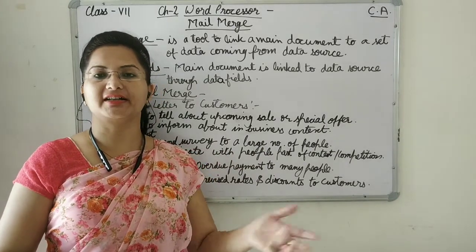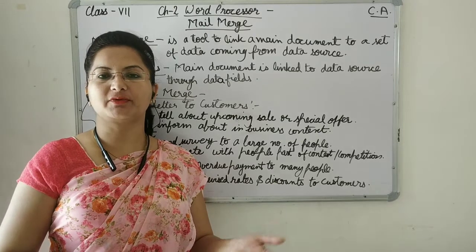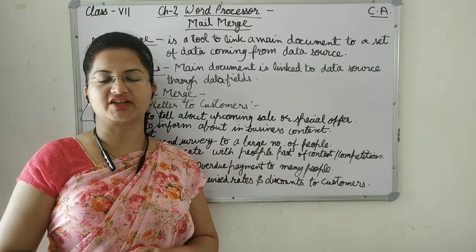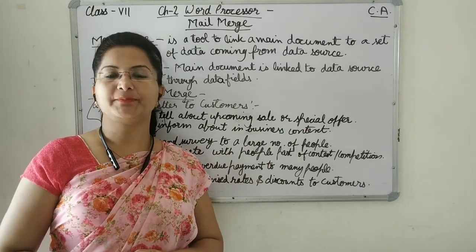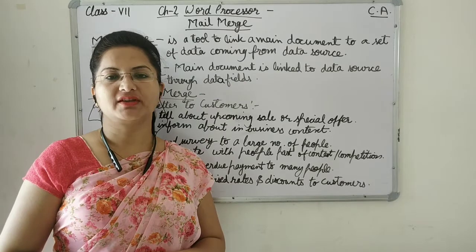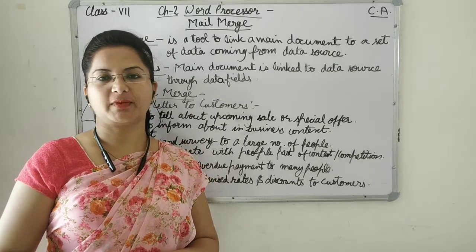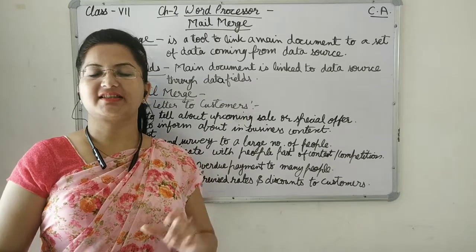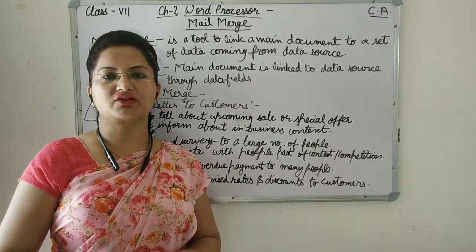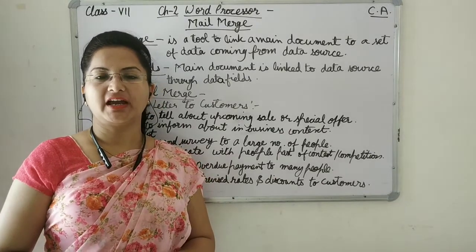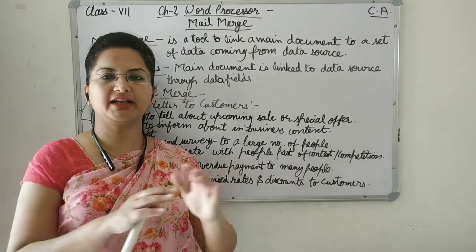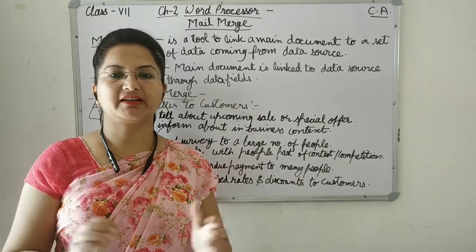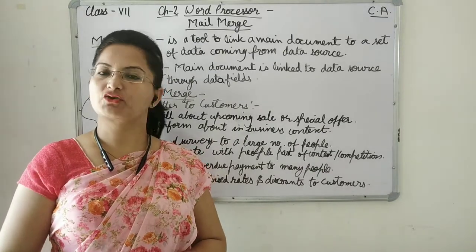In a certificate, only a few things need to change — like the student name, student house, the event they participated in, and the position they gained. We can store these things in the data source, the certificate will be the main document, and using Mail Merge we can link both documents. This way, certificates can be prepared for hundreds of students.